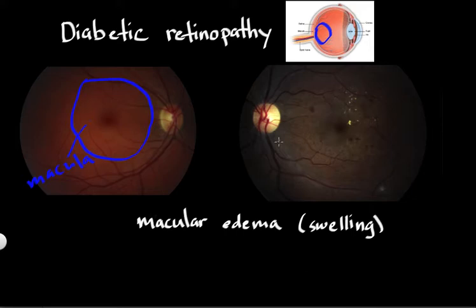Macular edema is one of the most common causes of vision loss in diabetics. When you see your eye doctor for a diabetic eye exam, they will look for signs of macular edema.